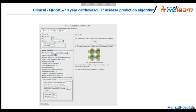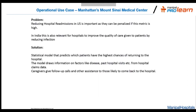Another use case, used in a hospital in New York: reducing readmissions. In the US, insurance providers may reject claims if a hospital has a high rate of readmissions. In India too, reducing readmissions improves quality of care and reduces the risk of patients acquiring infections. Statistical models can predict whether a patient should come back to the hospital now or not, preventing unnecessary return visits or bringing patients in at the right time.